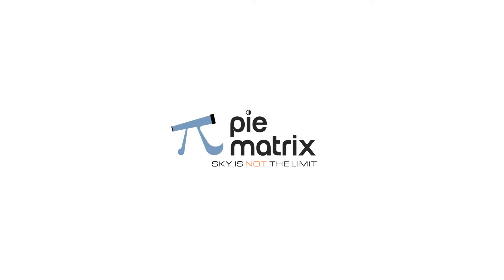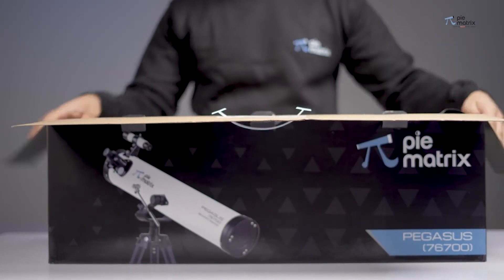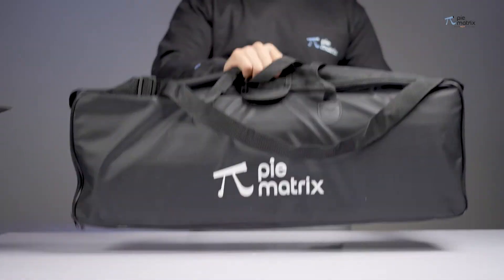Welcome to Pymatrix. This is a product installation video for Pegasus 76-700 which is a refractor telescope. It comes in a sleek black colored packaging along with a sturdy travel bag.